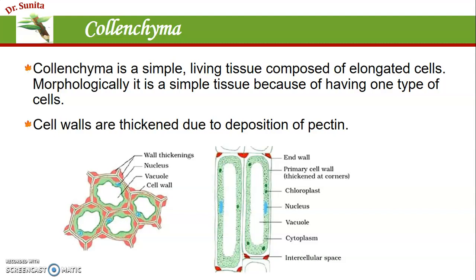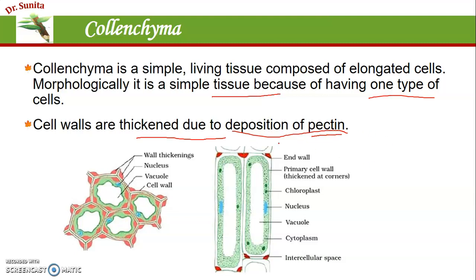Colenchyma is also a living tissue — a simple living tissue composed of elongated cells. It is a simple tissue because it has only one type of cell. The cell wall is thickened as compared to parenchymatous cells; here the deposition is of pectin substance, whereas in parenchymatous tissue the thickening is of cellulose.